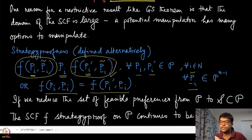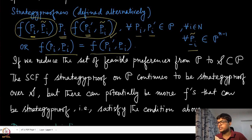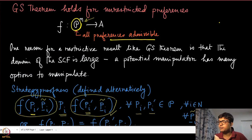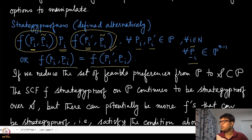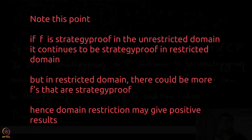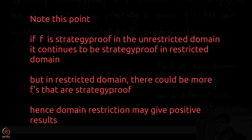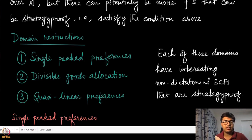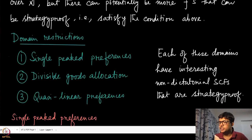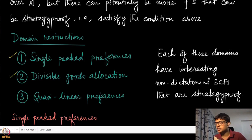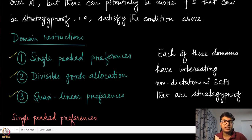We say a social choice function f is strategy-proof in this domain. Instead of taking a mapping from script P^n to A, we reduce P to a subset S, which we call a domain restriction. There are some important domain restrictions well known in the literature. We will discuss three of them: single-peaked preferences, divisible goods allocation, and quasi-linear preferences. The third domain restriction will be discussed in quite detail because it is very applicable to various real-world applications.